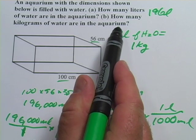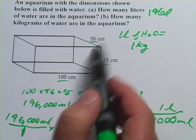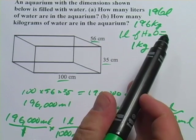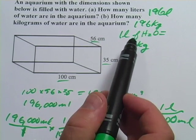So the answer for this one, how many kilograms of water, is the same with the units changed. It's 196 kilograms. Once you figure out liters, you've basically got kilograms.